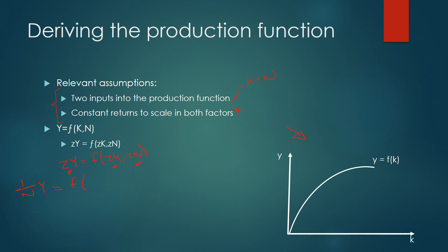So we can write this as 1 over N K, 1 over N N. Now you can see here that those two things actually cancel out. So we can actually write this as Y over N is equal to some factor of K over N 1.